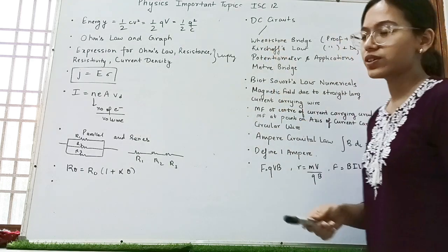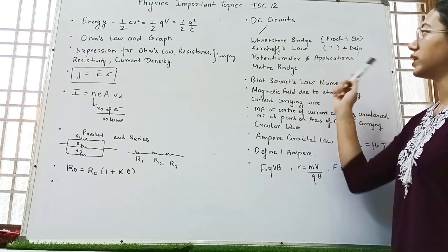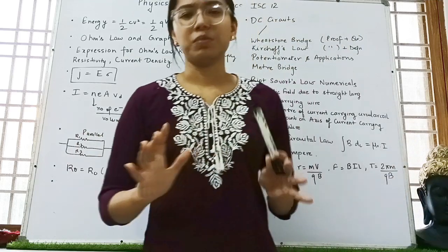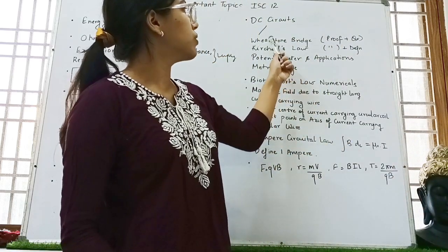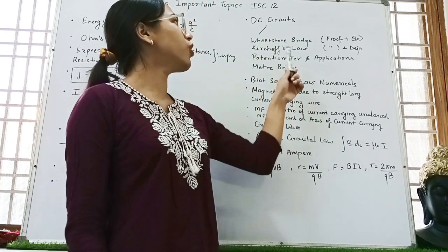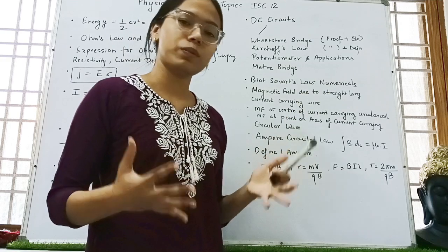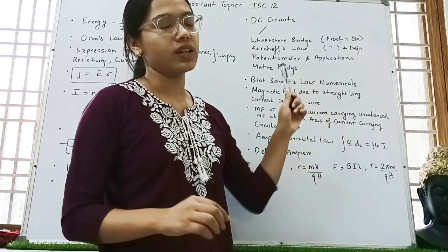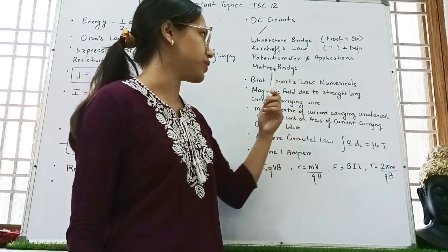Then we have DC circuits. Here you can see Wheatstone Bridge, Kirchhoff's Law, Potentiometer and applications. I think you have to do all of them. Nothing can be neglected. And the proof questions part for Wheatstone Bridge. Then for Kirchhoff's Law, you have to do the definition. Like they will be asking state Kirchhoff's Law and the derivation. And the questions are also asked. Numericals are asked every year. Then potentiometer and applications as I told you.